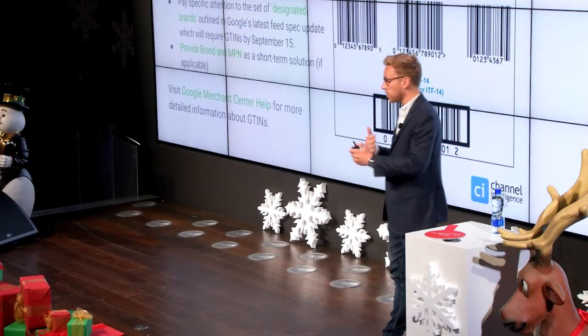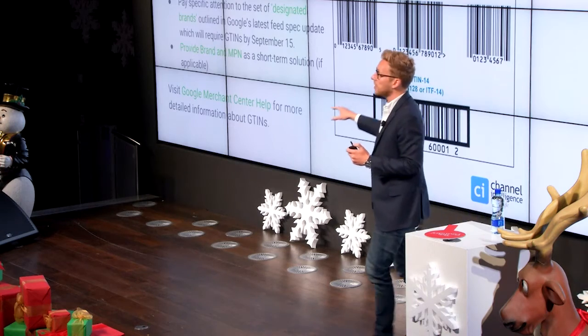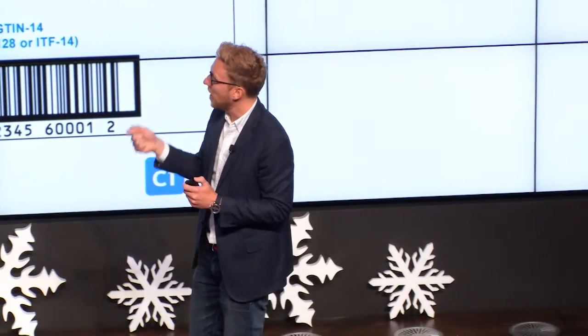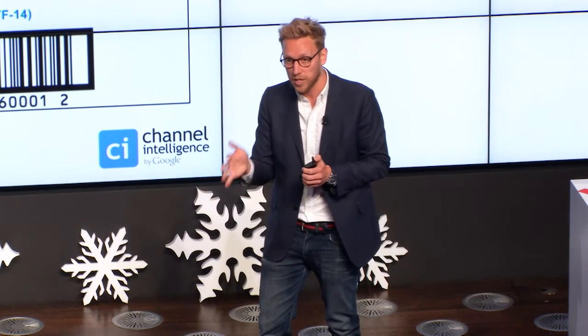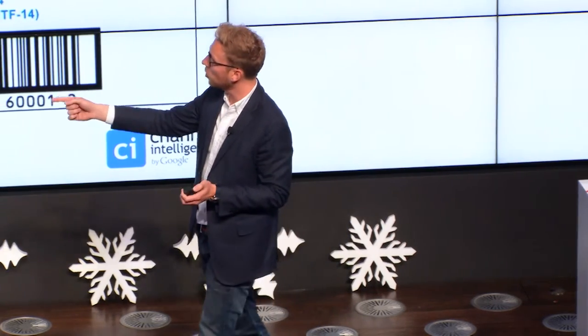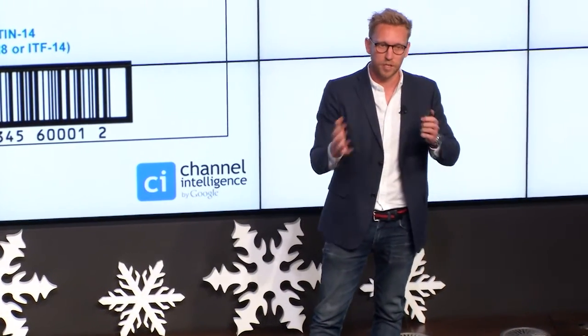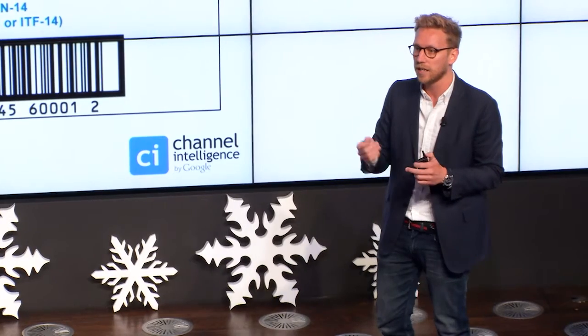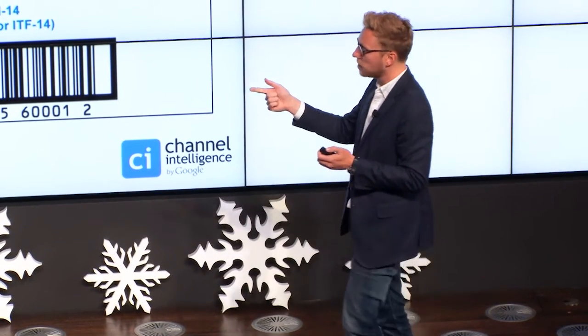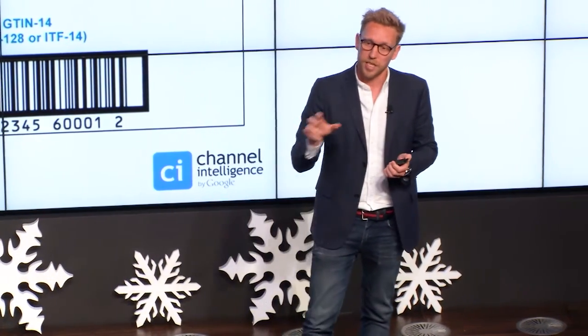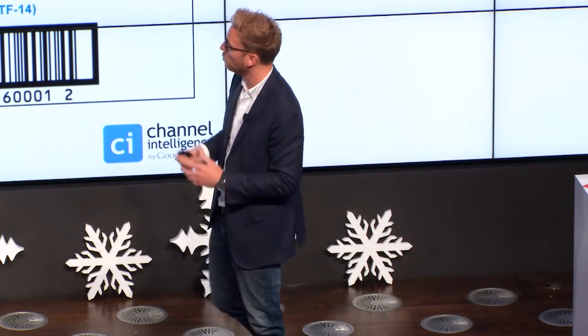Google is ensuring with its policies that GTINs become more of a focus. My recommendations are: make GTINs a requirement from all your suppliers. Pay specific attention to the set of designated brands which Google outlined last week — it's a list of 50 global brands that will require GTIN by the 15th of September as a mandatory attribute, otherwise products will potentially start getting disapproved. Outside of those 50 brands, generally you require at least two out of the three key unique identifiers: GTIN, brand, and manufacturer part number (MPN). As a short-term solution while you're chasing GTINs, if you have brand and MPN, include them in your feed to ensure your products stay live in the PLA auction.